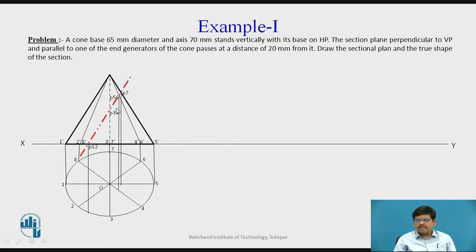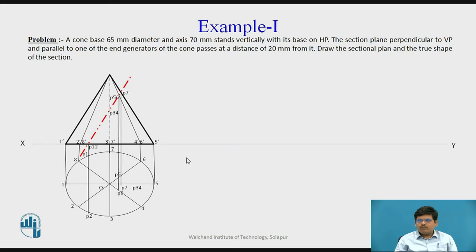Only point 3 and 4 are remaining. For that, we project point 3 and 4 onto one of the generators, as these cannot be plotted directly in the top view — so we need a construction. We project them onto generator O5, and in the top view also we project it on O5. Then we rotate these points back to their original generators — that is O3 and O7. So we have rotated those points back to their original generators.